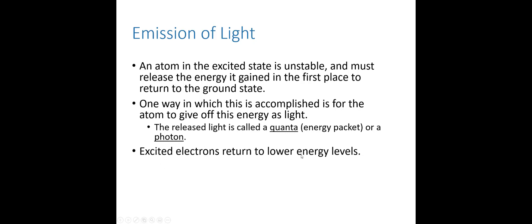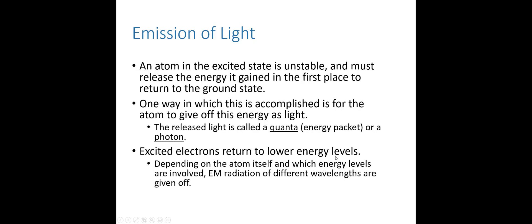The excited electrons return back to their positions in the lower energy level. Those photons have a different wavelength associated with them from atom to atom, which means they can be different types of electromagnetic radiation. Some of them might correspond to red light, some to blue light, some might be ultraviolet, and some might be infrared.